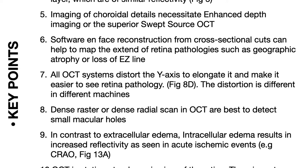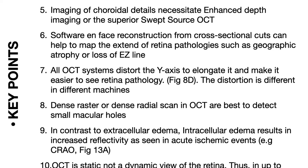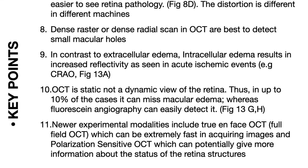Dense raster or dense radial scans in OCT are best to detect small macular holes. In contrast to extracellular edema, intracellular edema results in increased reflectivity, as seen in acute ischemic events. OCT is static, not a dynamic view of the retina. Thus, in up to 10% of cases, it can miss macular edema, whereas fluorescein angiography can easily detect it.